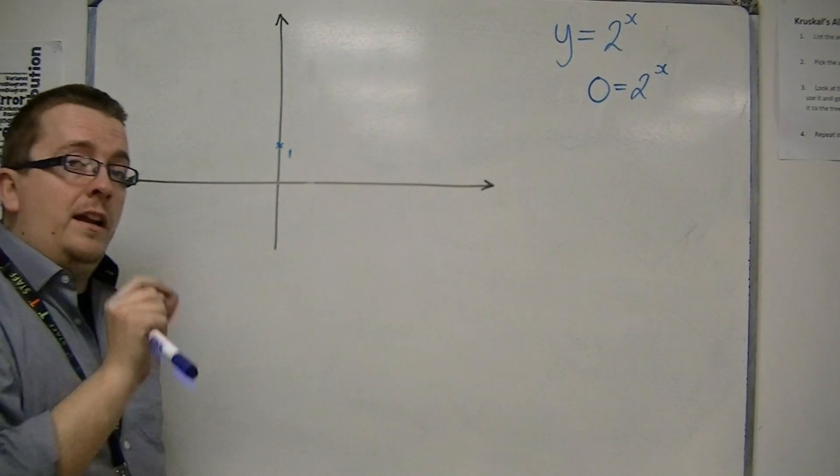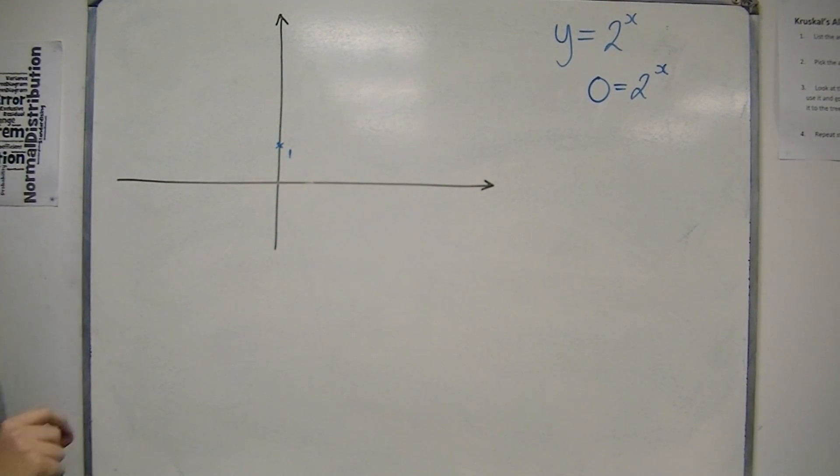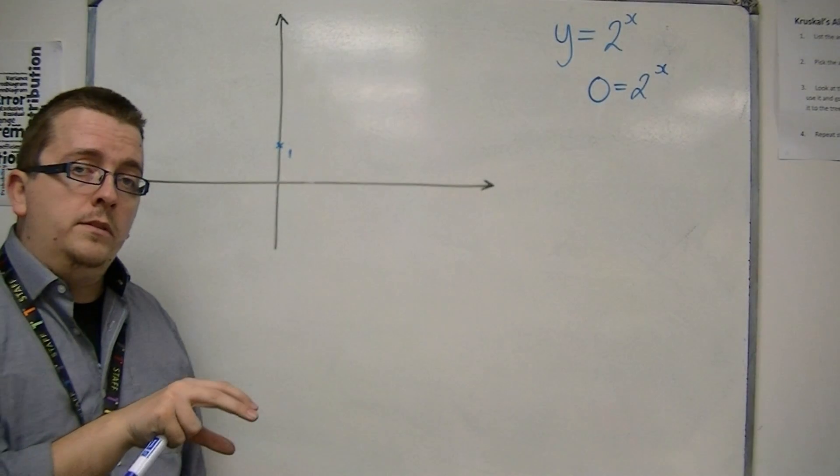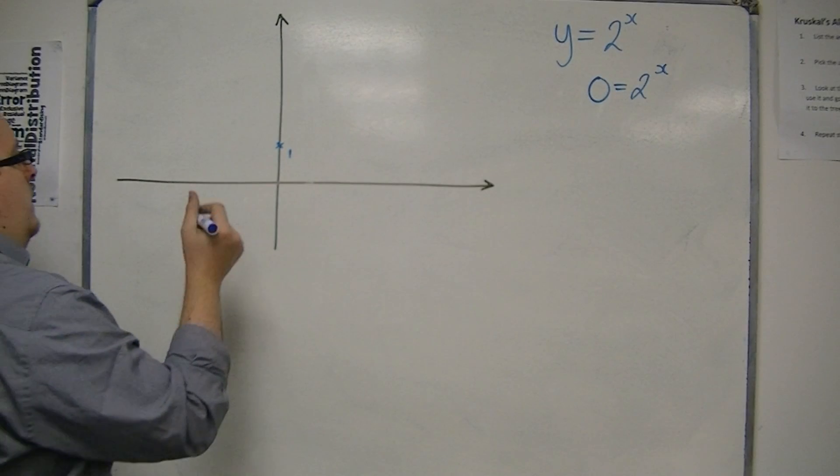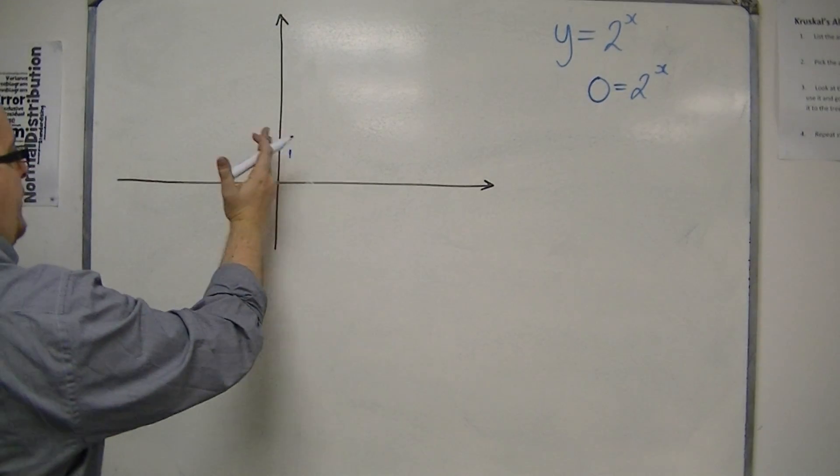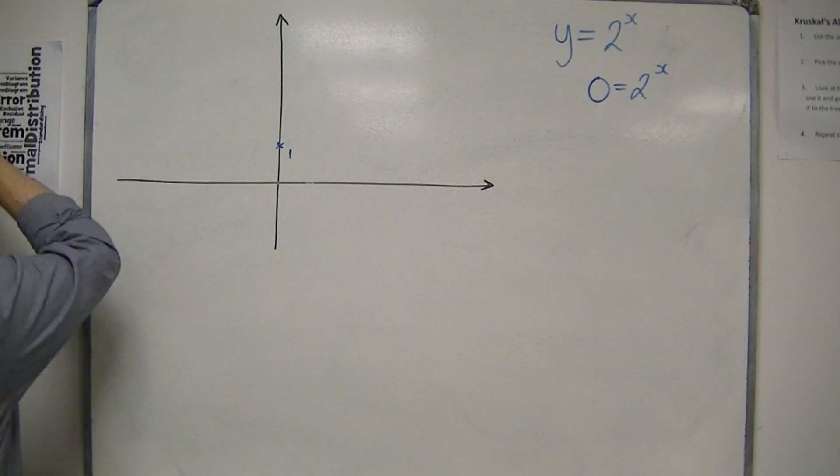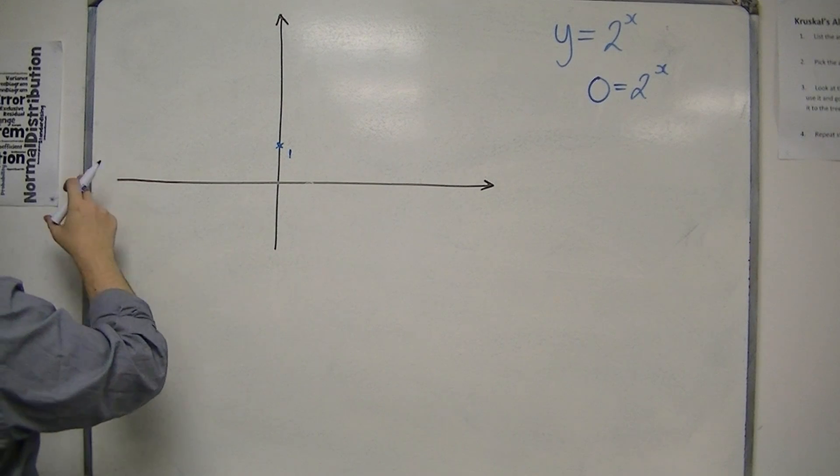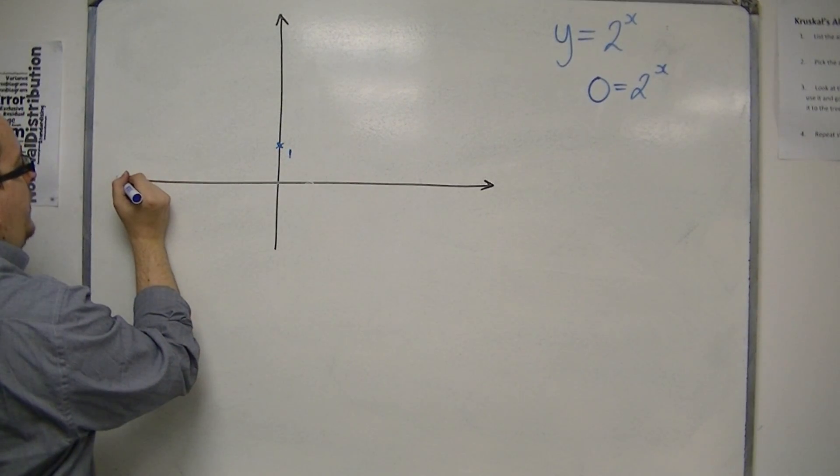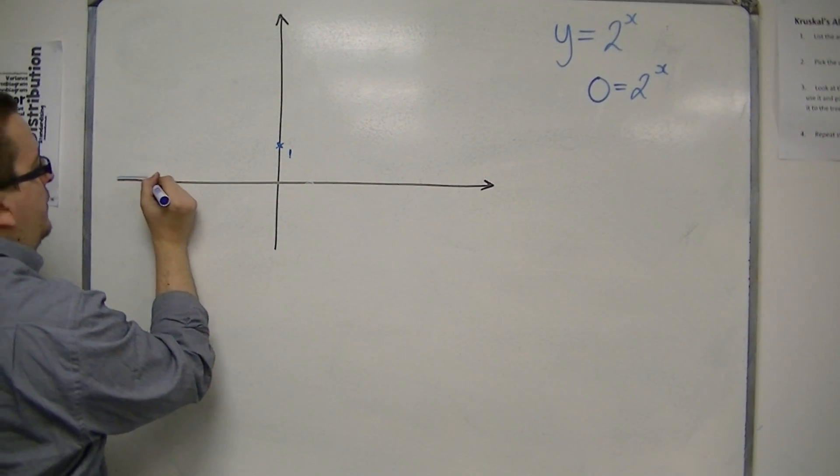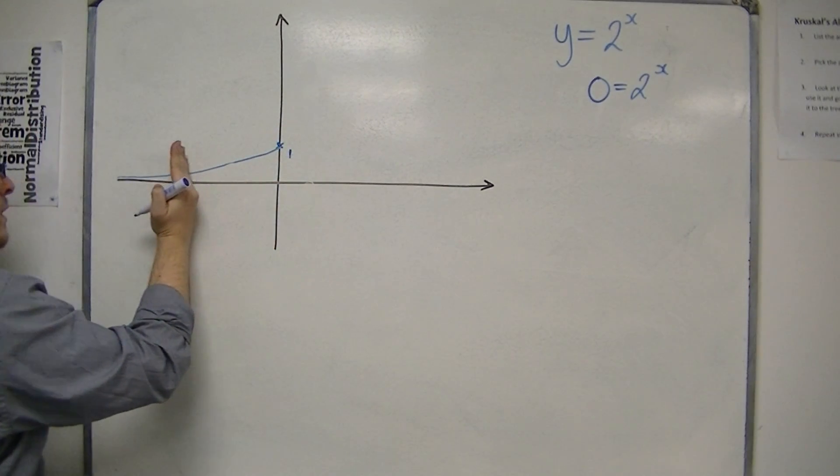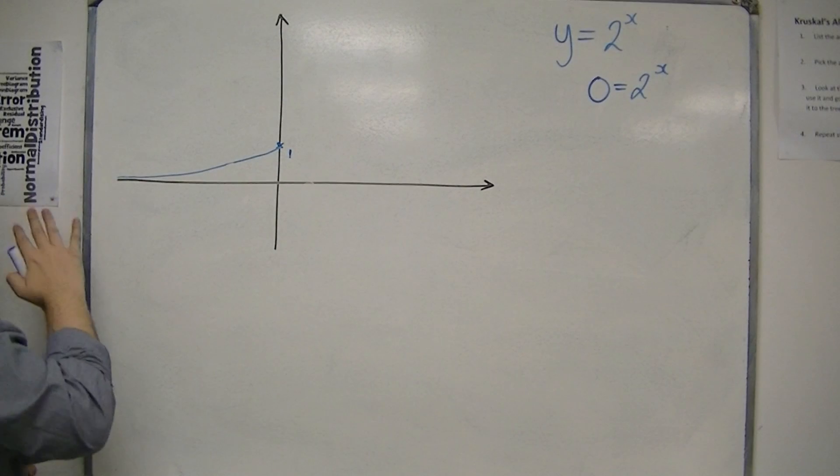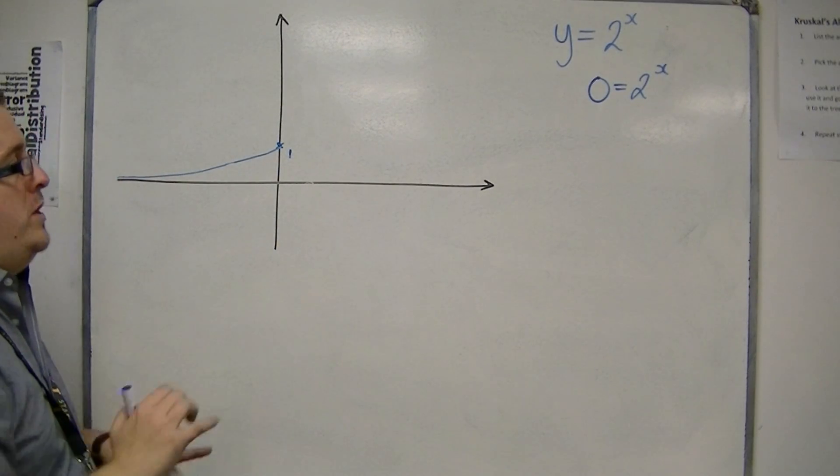You can get very close to it. 2 to the minus a million is very, very small, but it's not quite 0. And so if we're looking at minus 10 or minus 100 or minus a million, we're getting closer and closer to 0. And so on the left hand side of this curve, we find that the curve gets closer and closer to 0, but never quite reaches it, never quite reaches the x axis.